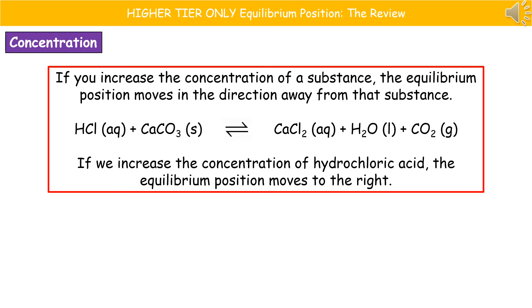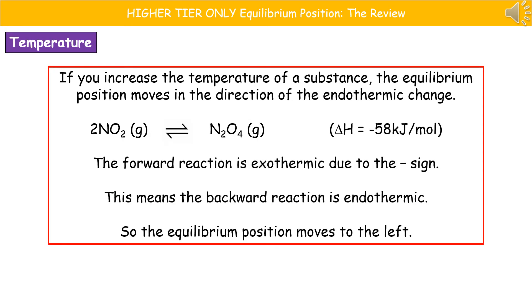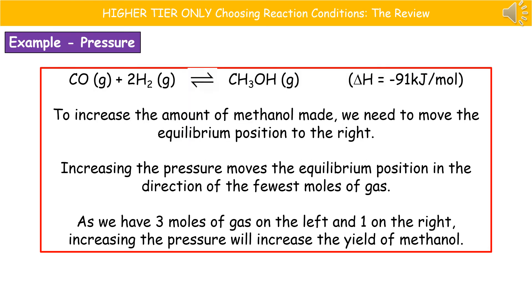The final factor is temperature. If we increase the temperature, the equilibrium position moves in the direction of the endothermic change. In the example here, the forward reaction is exothermic, and we can tell that because of the minus sign in front of our delta H. That means the backward reaction is endothermic, so if we increase the temperature the equilibrium position in this example moves to the left.